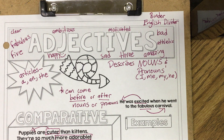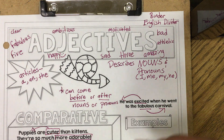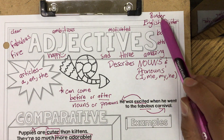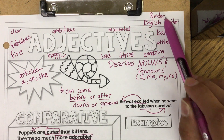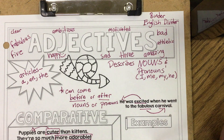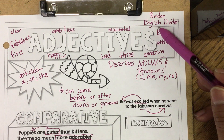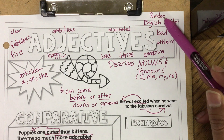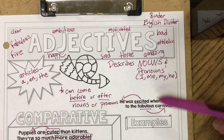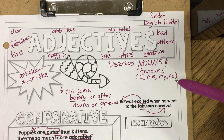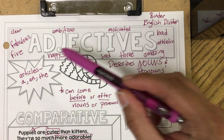Welcome to the adjectives lesson on my YouTube channel. Please have your adjectives doodle page and write the word binder and English divider. This is where your adjectives doodle notes are going to be placed behind the English divider in your binder. We're going to start putting our notes in our binder so you can keep better track of them and have them when you work on any Mad Libs story.